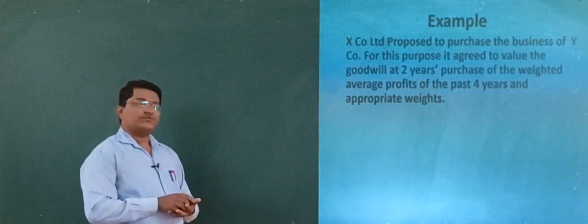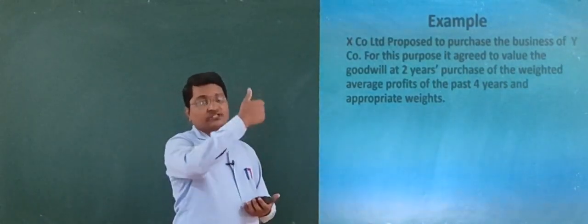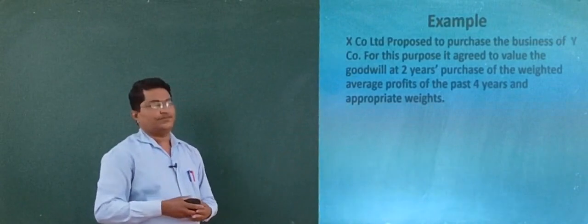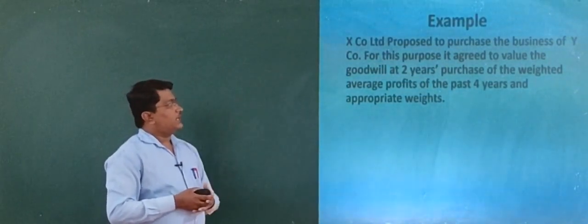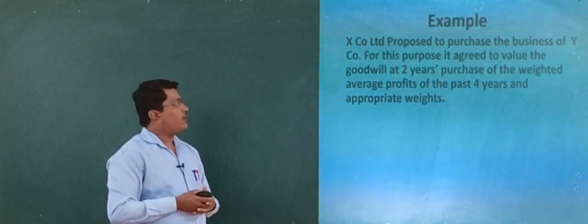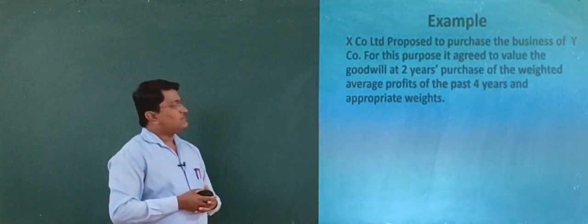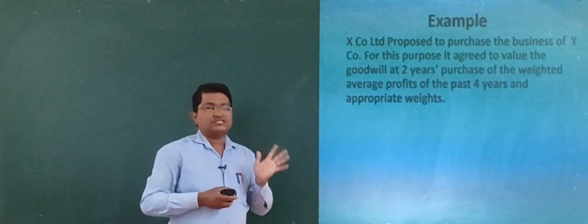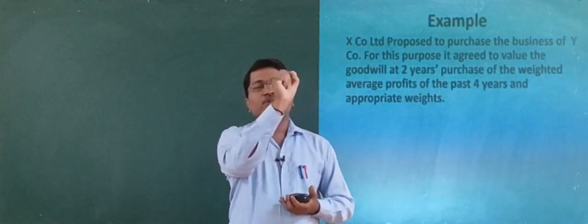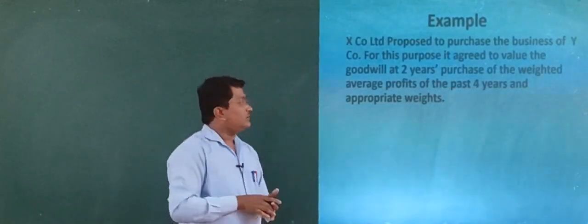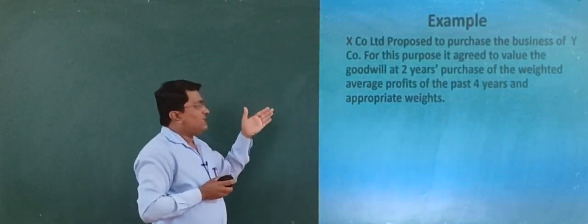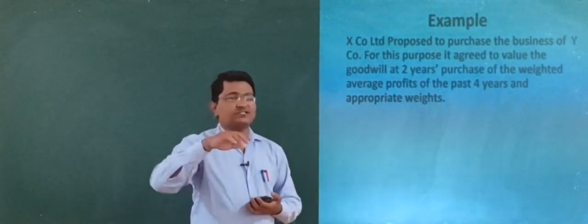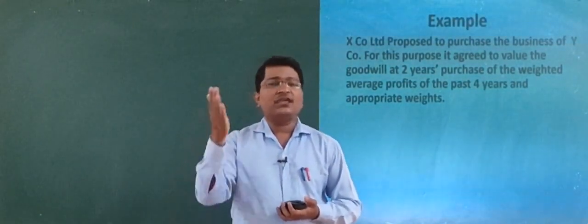I will read the first example — please note it down. X Company Limited proposed to purchase the business of Y Company Limited. For this purpose, it agreed to value the goodwill at 2 years' purchases of the weighted average profit of the past 4 years under appropriate weights.